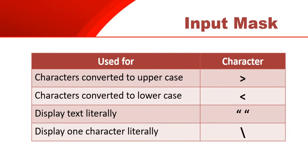If you want to display text literally - for example AM at the end of a time - and you don't want that A to be confused with the input mask code A, you can use quotation marks around AM and it will display as-is. If you want to display just one character literally, use a backslash before it. So slash-L won't be treated as the letter code; it will just display the actual character L.